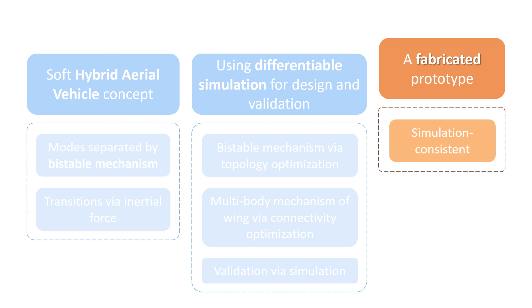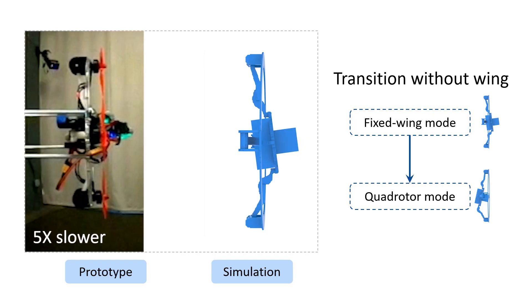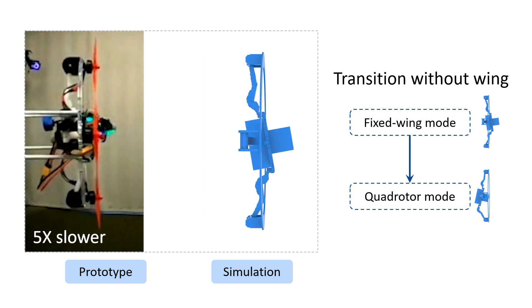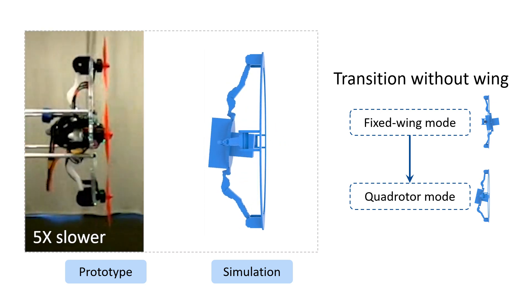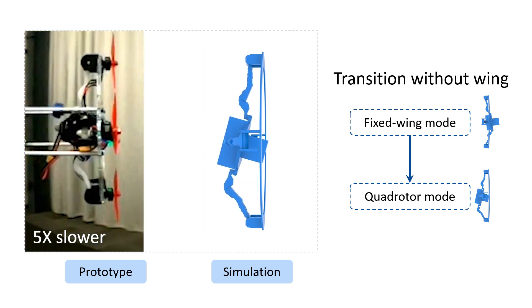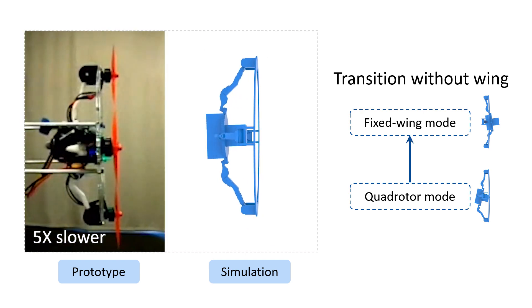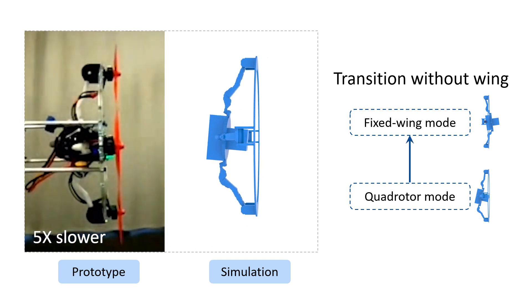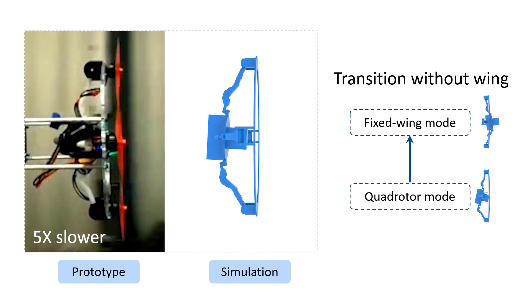We show our experimental results on a fabricated prototype. We mount the HAV without wings to the end of a low-friction boom. The transition from fixed-wing to quadrotor is compared with simulation, and the transition from quadrotor to fixed-wing.